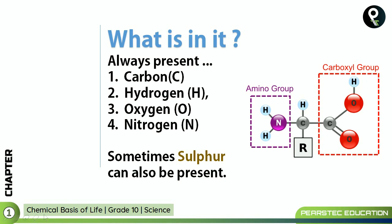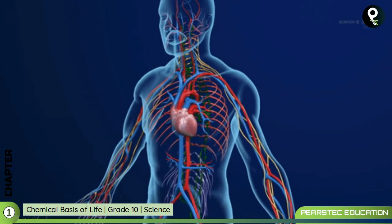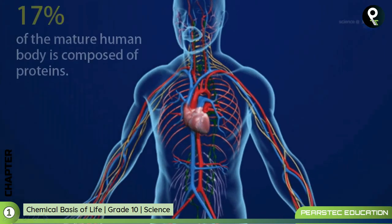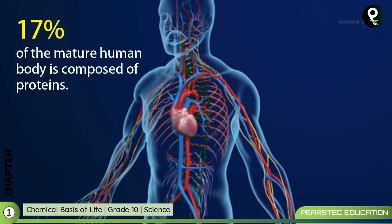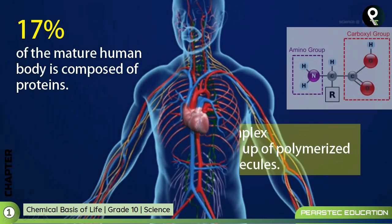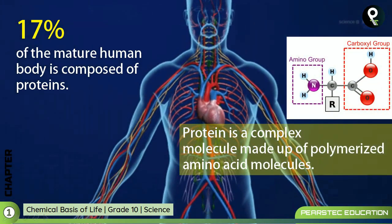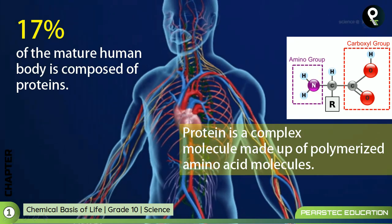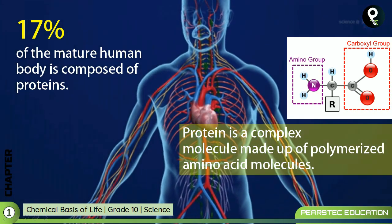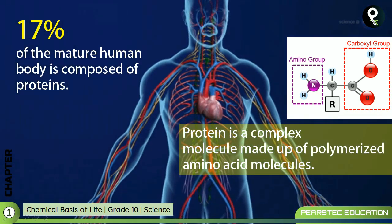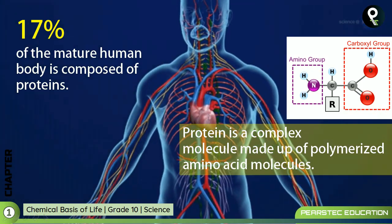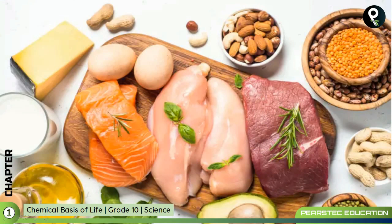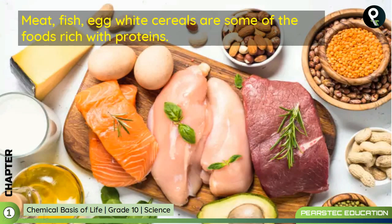17 percent of the mature human body is composed of proteins. Protein is a complex molecule made up of polymerized amino acid molecules.